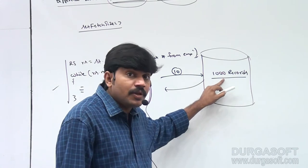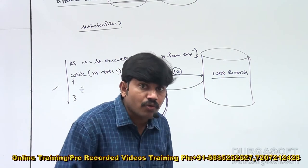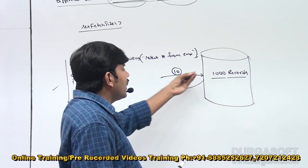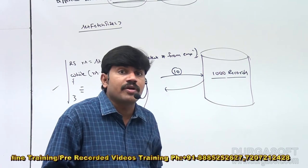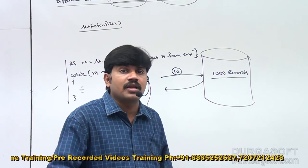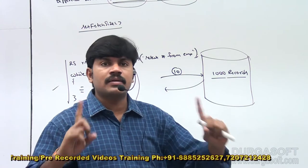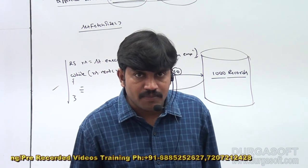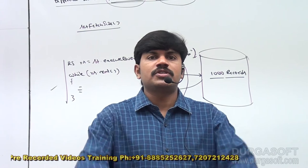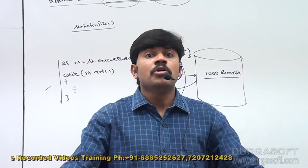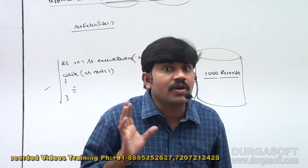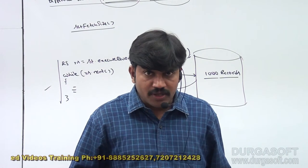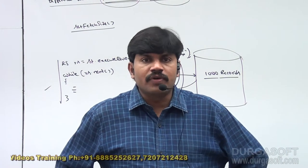If our database table contains one thousand rows, to retrieve all of them with a default fetch size of ten, we need to communicate with the database one hundred times internally. That means the number of network calls increases and performance goes down.